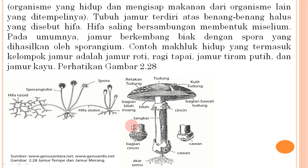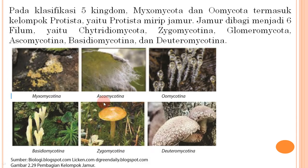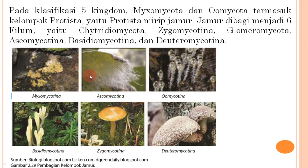Pada klasifikasi lima kingdom, miksomikota dan oomikota termasuk kelompok protista mirip jamur. Jamur dibagi menjadi enam filum yaitu: Chytridiomycota, Zygomycotina, Glomeromycota, Ascomycotina, Basidiomycotina, dan Deuteromycotina.